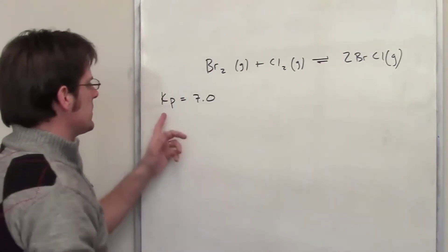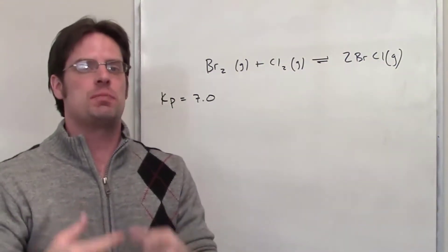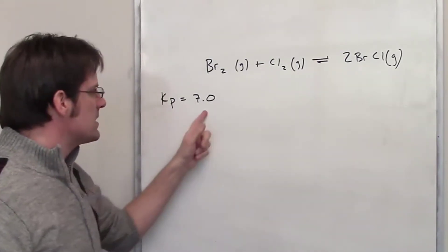It also provides us the Kp value, that is the equilibrium constant with respect to pressure. Once this system is at equilibrium it says that it's equal to 7.